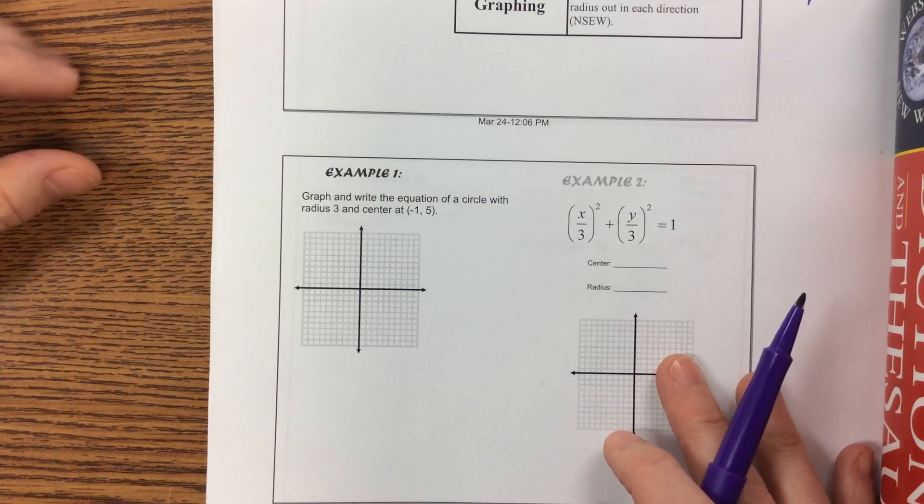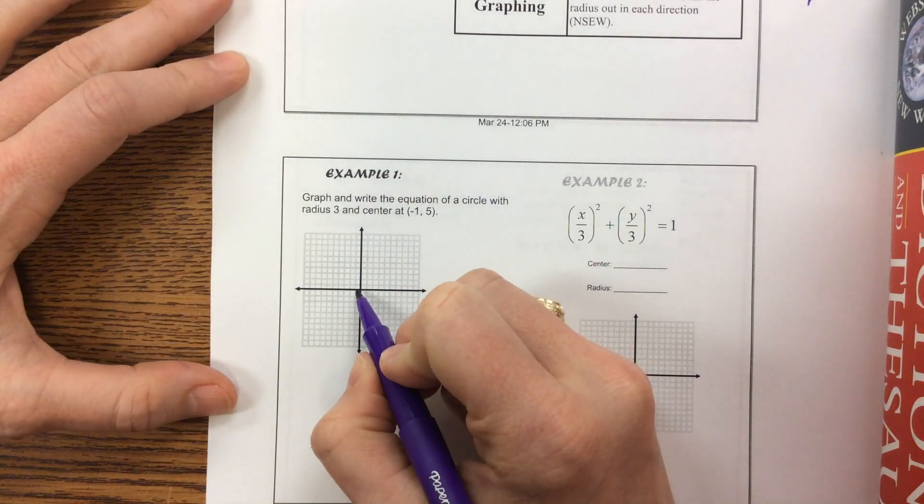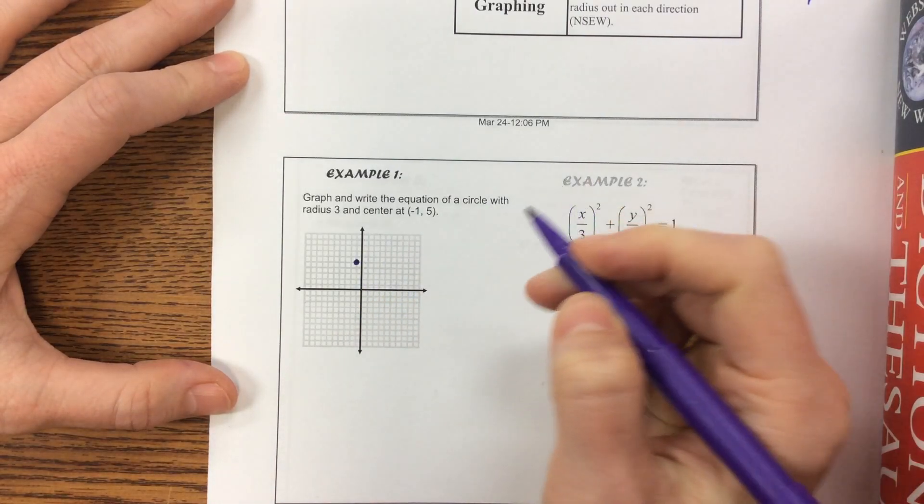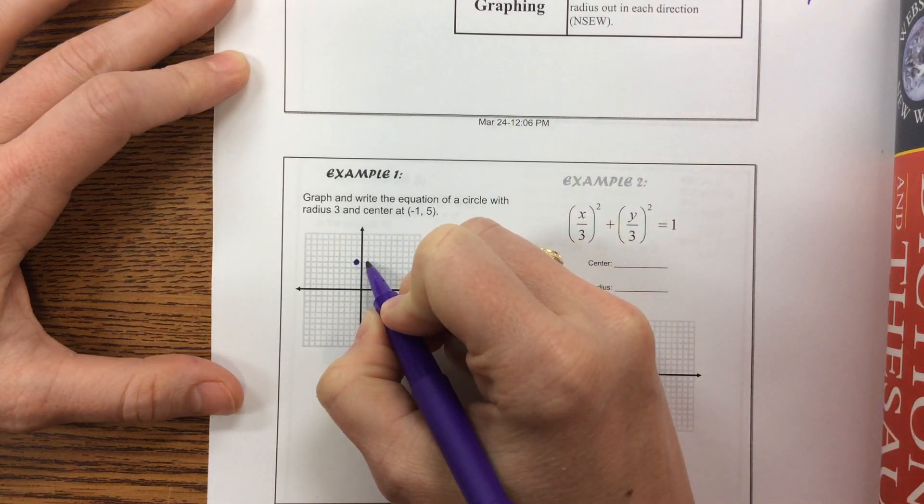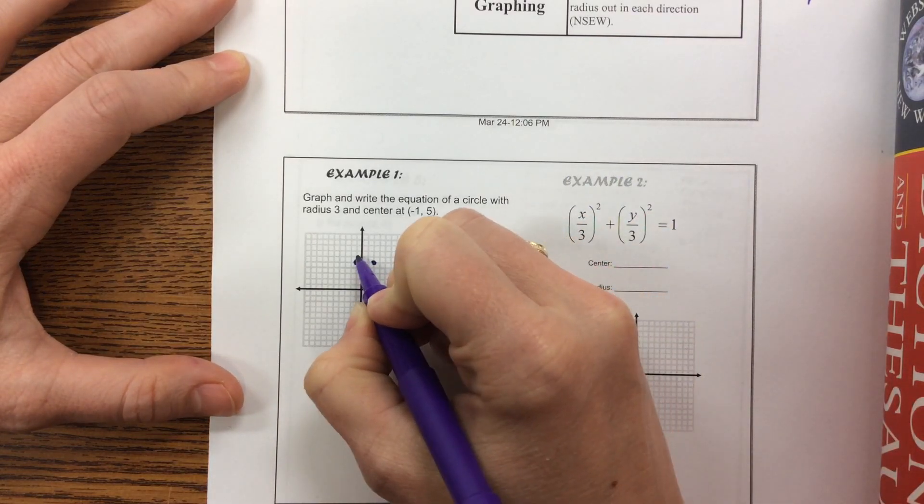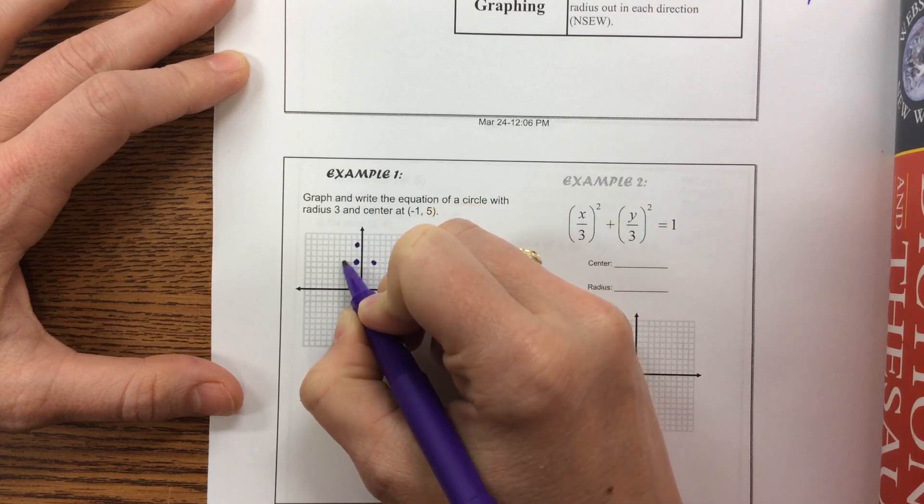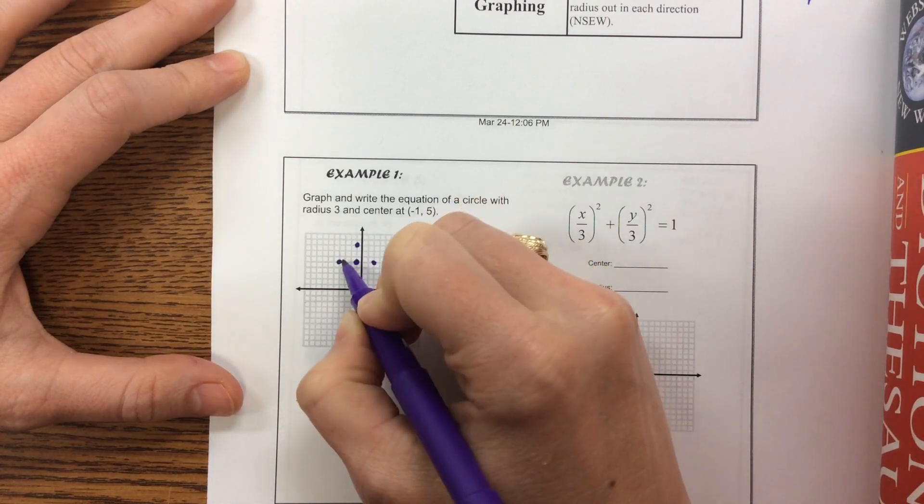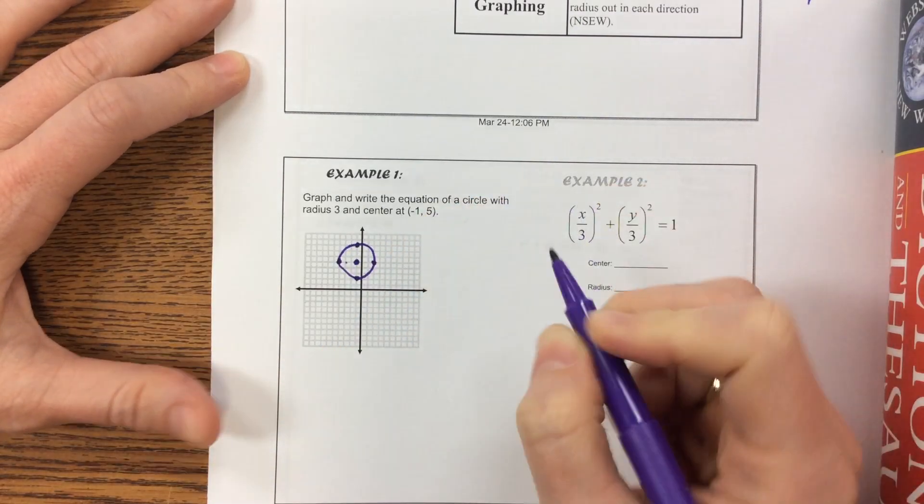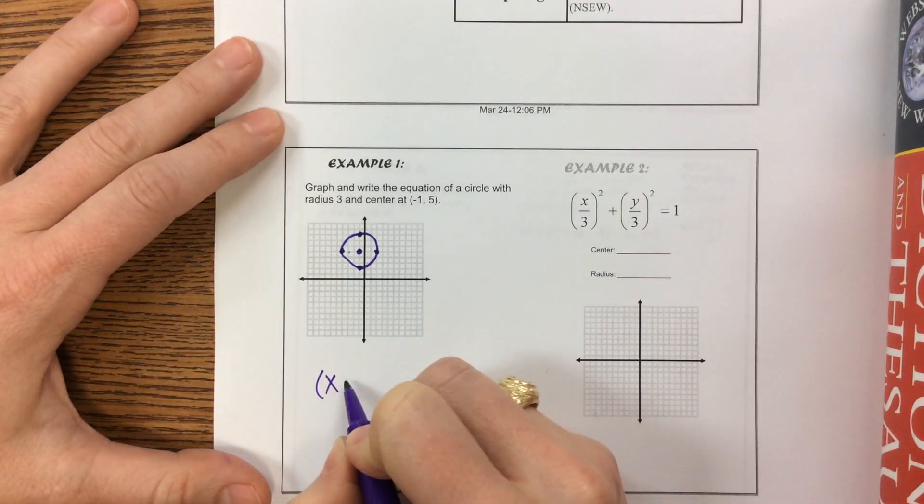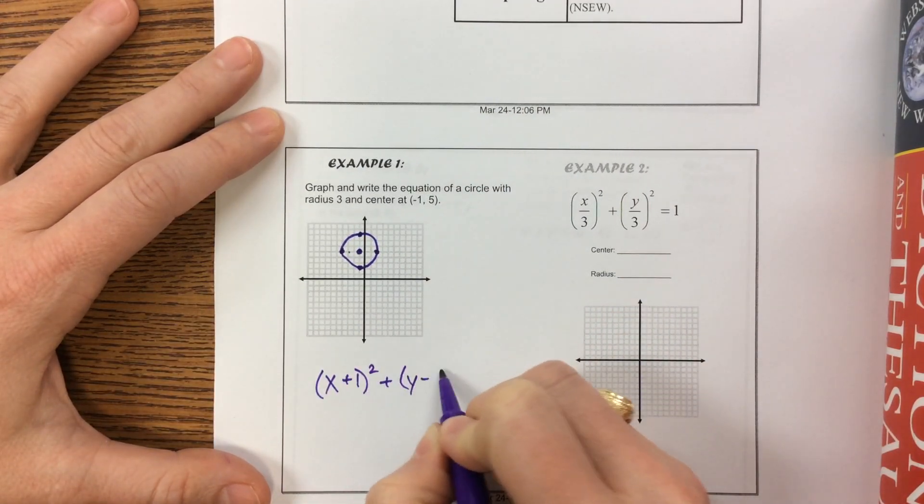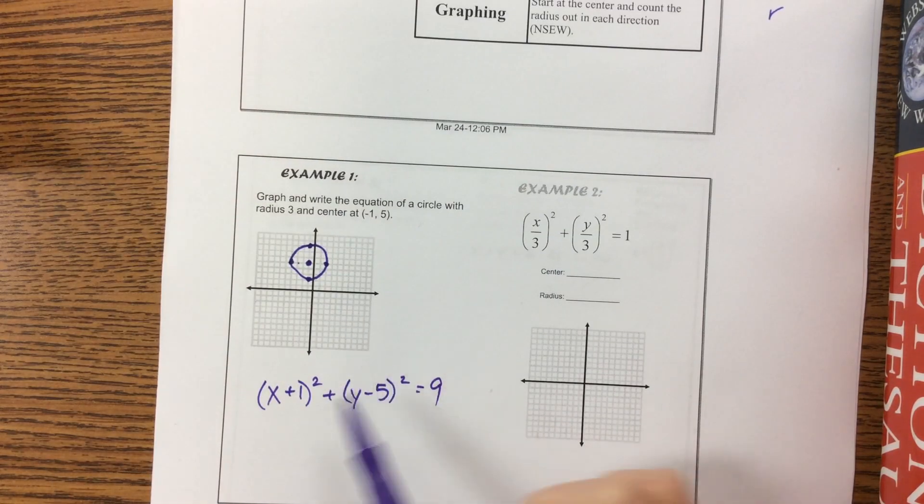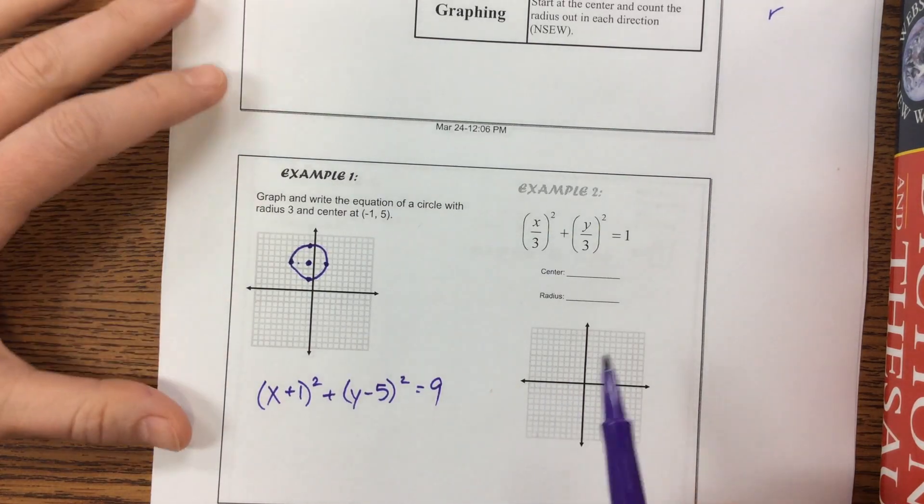The first one: graph and write the equation of a circle with radius 3 and center at negative 1, 5. So I plot negative 1, 5, then count radius of 3 in all directions. Here's our lovely circle. The equation becomes x plus 1 squared plus y minus 5 squared equals 9. If I give you a question like this on the test, you need to say thank you, because that's really easy.